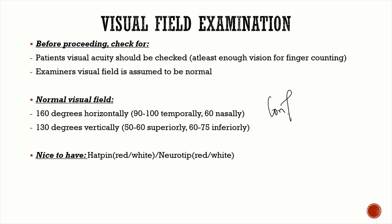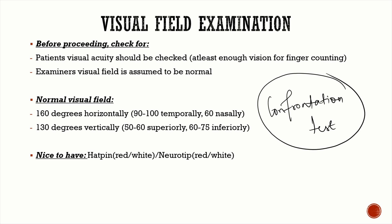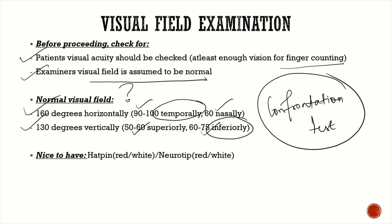For visual field examination, we use the confrontation test. The prerequisites are: the patient's visual acuity should be checked and should be at least finger counting, and you must assume your own visual field is normal. A viva question: the normal visual field is 160 degrees horizontally and 130 degrees vertically — 90 to 100 degrees temporally, 60 degrees nasally, 50 to 60 degrees superiorly, and 60 to 75 degrees inferiorly.